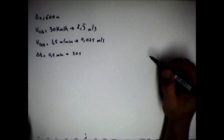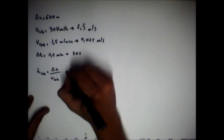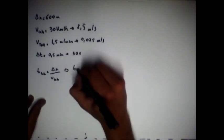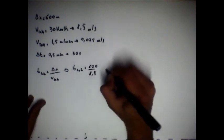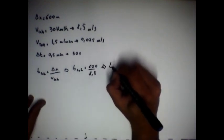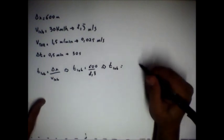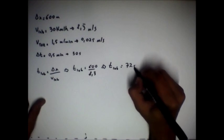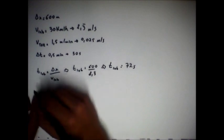O tempo total que cada um gasta para percorrer a distância é o seguinte. O tempo da lebre é delta x sobre a velocidade da lebre, isso implica que o tempo da lebre é igual a 600 sobre 8,3. Então, o tempo da lebre é aproximadamente 72 segundos. Esse é o tempo que ela leva para percorrer toda a distância, 600 metros.